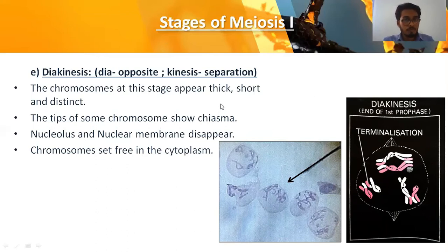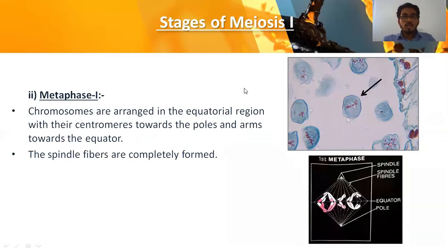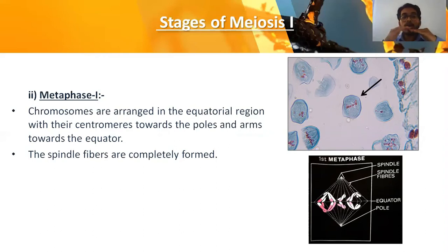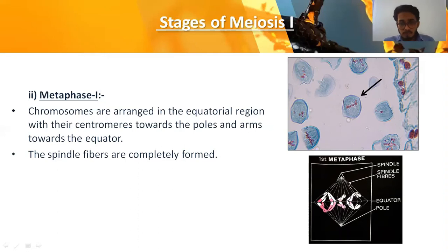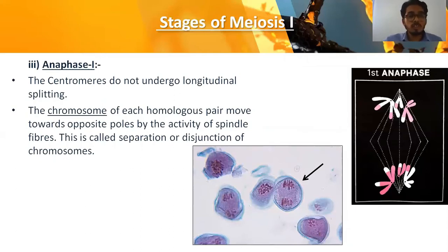The next step is metaphase one. In this stage, centrioles produce spindle fibers connected to both poles of the cell. The spindle fibers pass through the centromeres of chromosomes and align all chromosomes towards the equatorial region — exactly at the center of the cell. The centromeres face towards the poles, while the chromosomal tip regions face towards the equatorial region, which is the center of the cell.